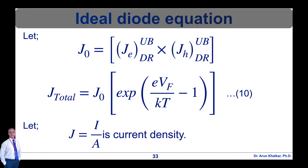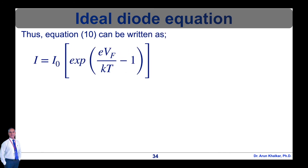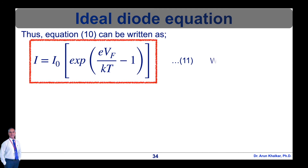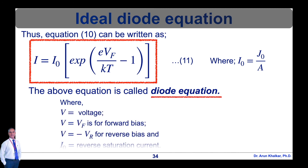Since current density J = I / A, equation 10 can be written as: I = I_0 × (exp(eV_F / kT) − 1) — equation 11. This is the diode equation, where I_0 = J_0 × A is the reverse saturation current. V denotes the voltage: V = V_F for forward bias and V = −V_R for reverse bias. The diode current equation expresses the relation between the current flowing through the diode as a function of the voltage applied across it.